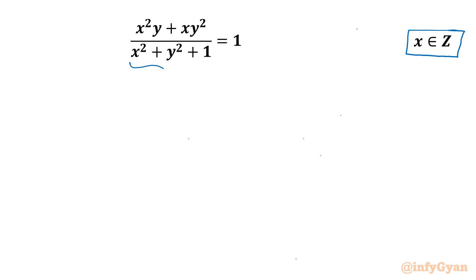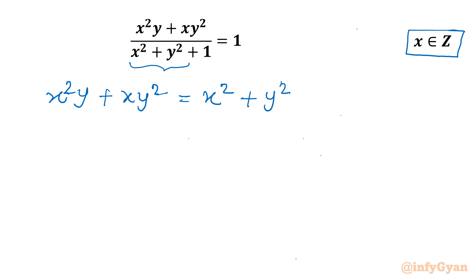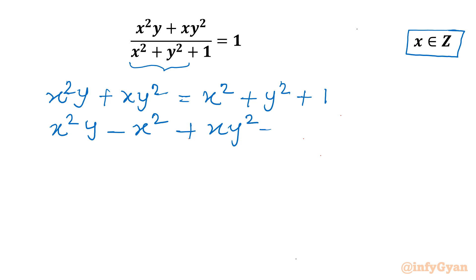The denominator cannot be 0, as it is a sum of two squares, so we will cross-multiply: x²y + xy² = x² + y² + 1. Now I will take x² + y² to the left side: x²y - x² + xy² - y² = 1.